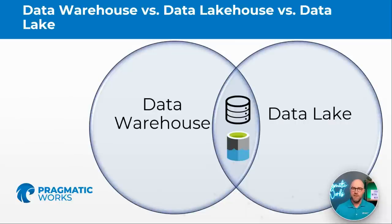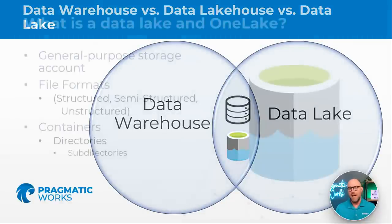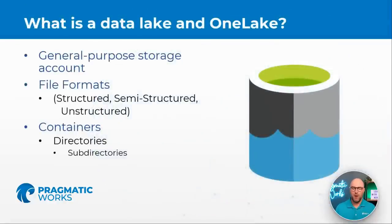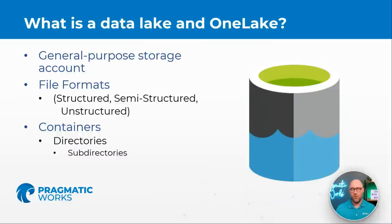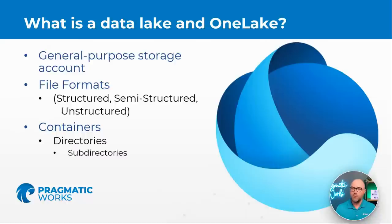When we talk about the lake house, we're storing our data on a data lake but having the structure of a traditional data warehouse — where you can write SQL operations against it and have confirmed ACID properties, meaning transactions and data are going to be reliable. The One Lake is going to be something like a OneDrive for your organizational data — a single location so that all the different jobs you perform can operate against a single source of truth instead of multiple versions of the truth across the organization.